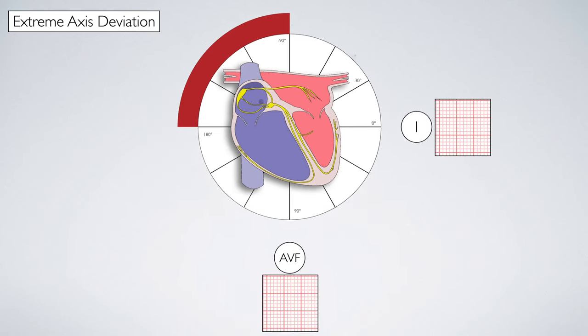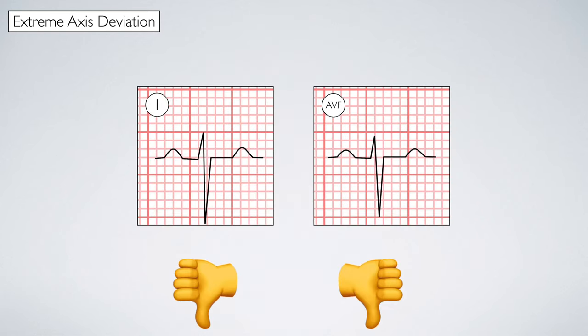In this scenario, the mean vector moves away from both lead one and AVF, resulting in both complexes being negative. It's like a double thumbs down sign from the heart, showing us that things are not okay.